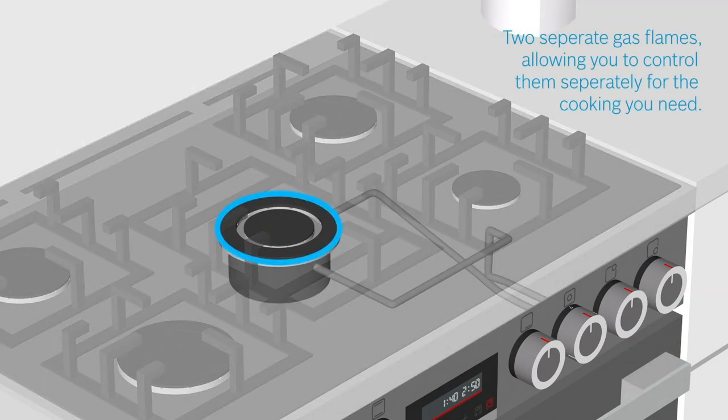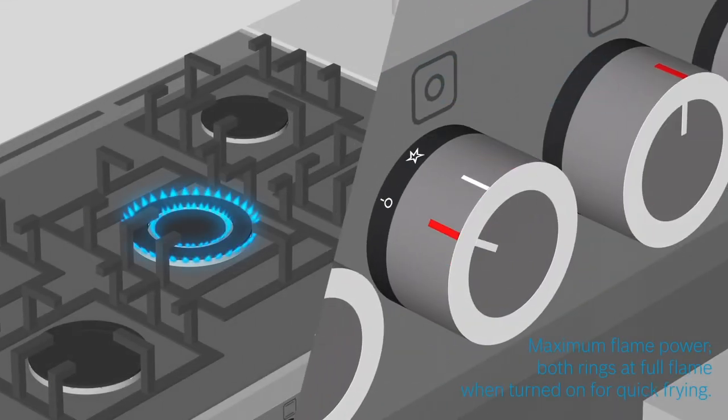The dual control wok burner has two separate gas supplies, allowing you to control them separately and get the desired cooking temperature on two different flame rings.